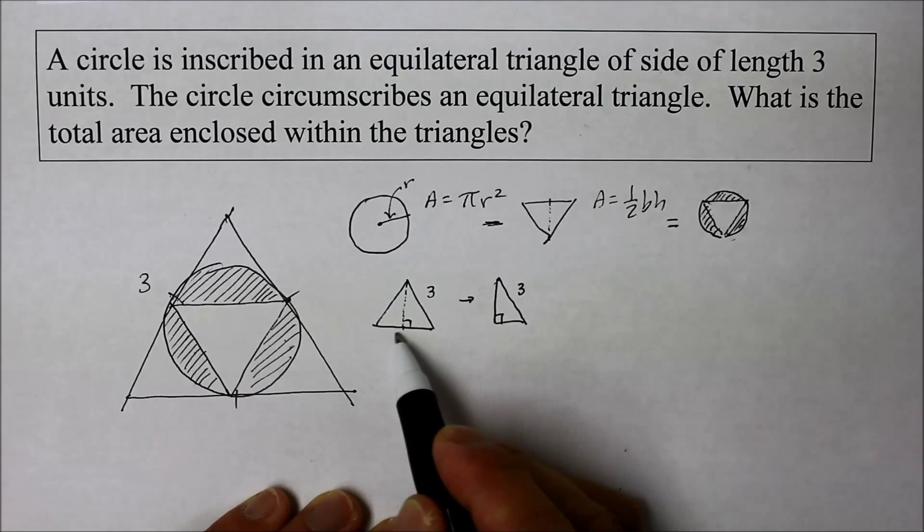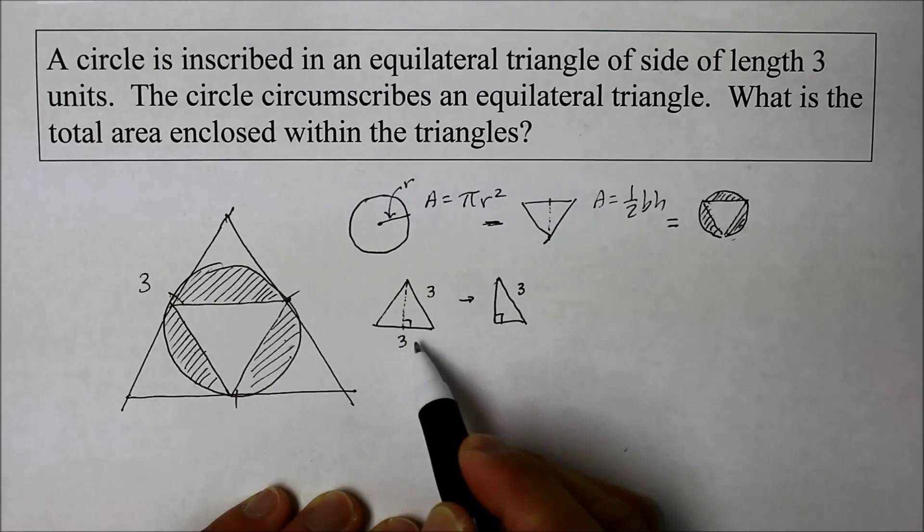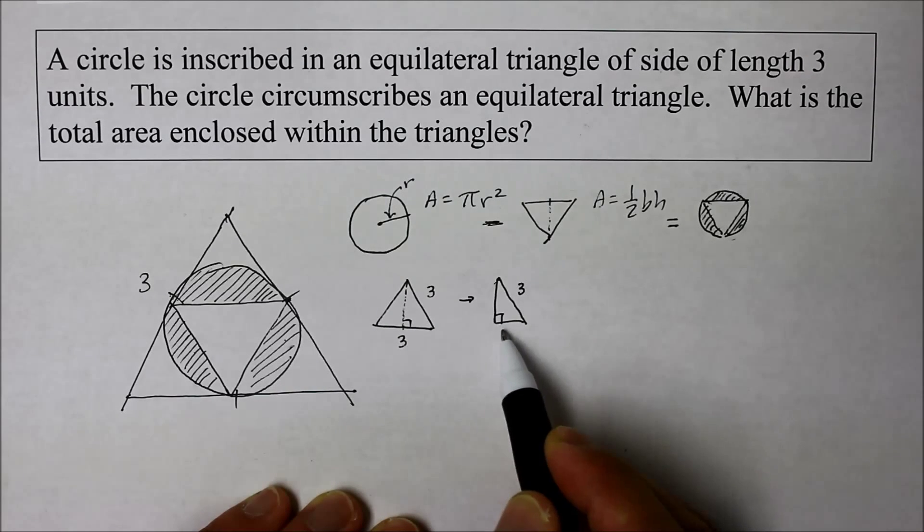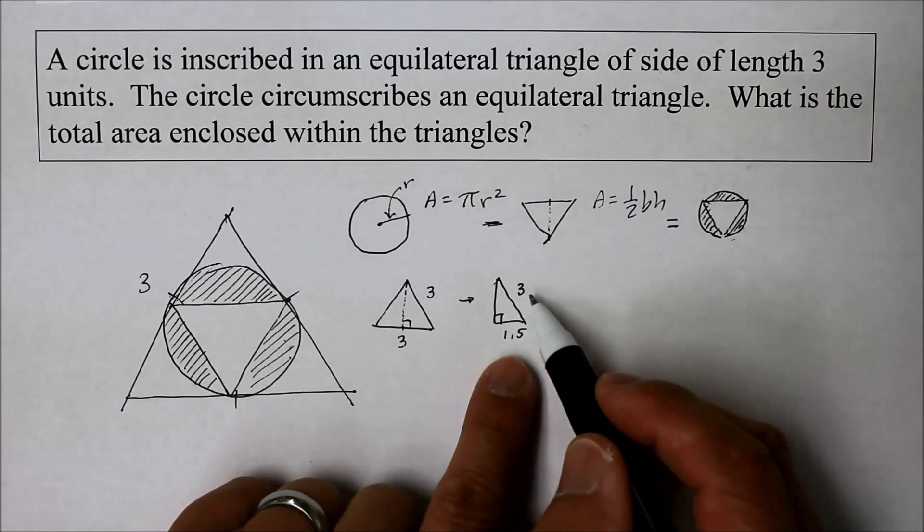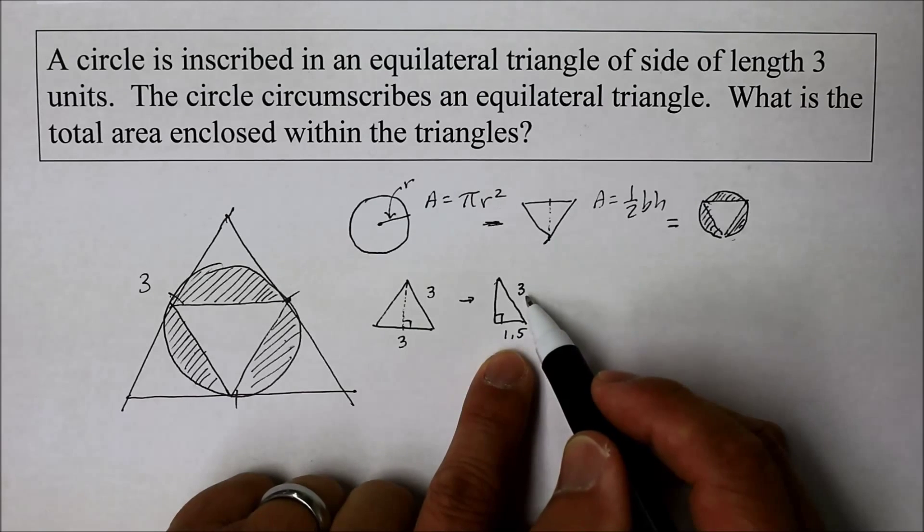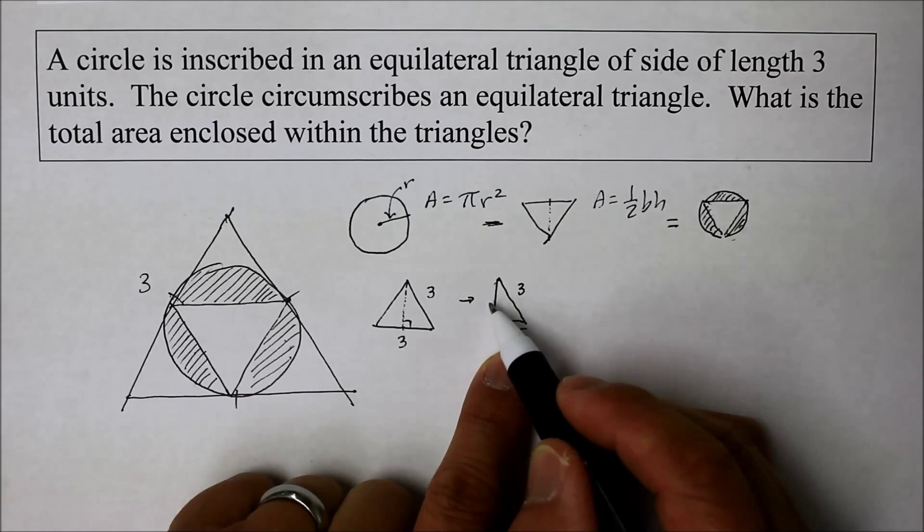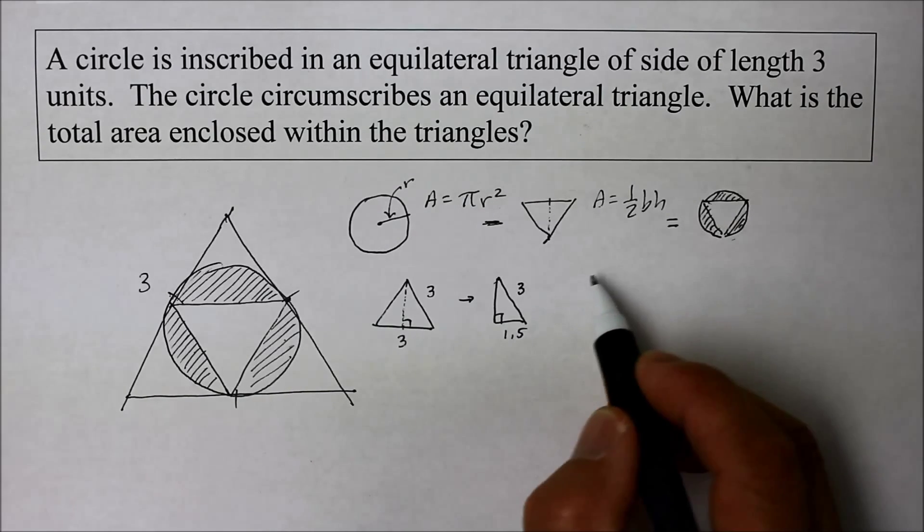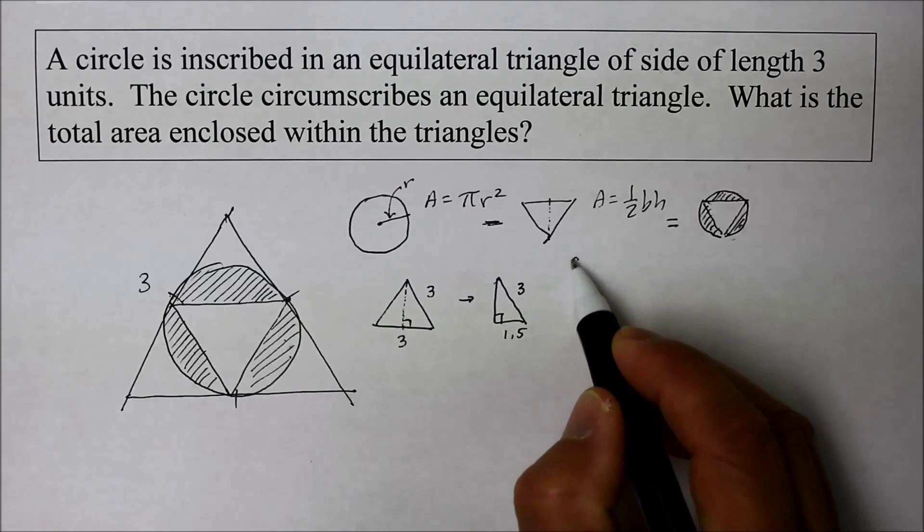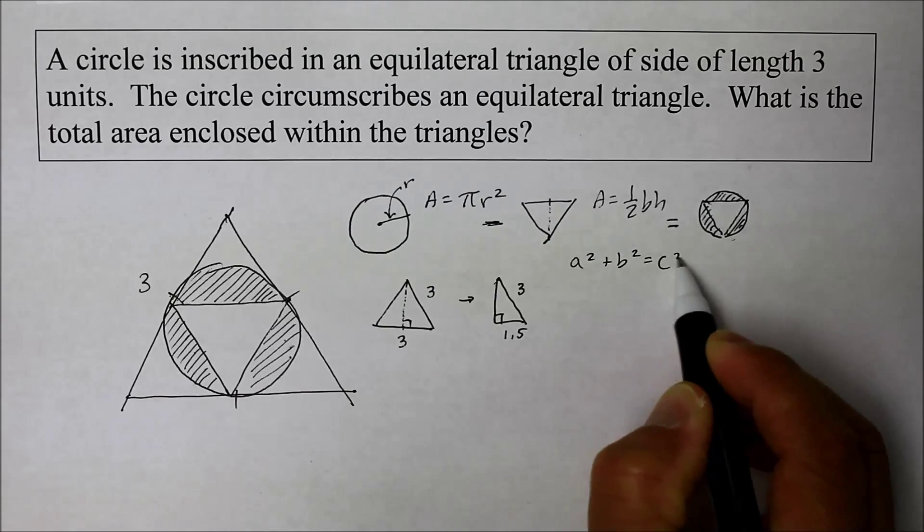Because this was an equal side, this was also three. But now we only need half of it. So it's 1.5. So we know two sides to this triangle. We just need to look for the third side. And to find that, we could use the Pythagorean Theorem. You know, a squared plus b squared equals c squared.